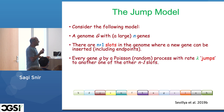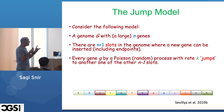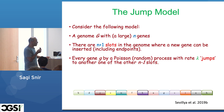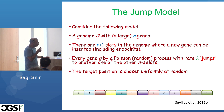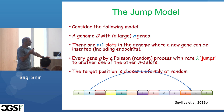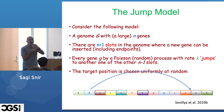Every gene G, by a Poisson random process with rate lambda, jumps to another slot — one slot out of the other slots in the genome. That target position is chosen uniformly at random. There was no real stochastic process describing gene order deterioration before this. So this model comes to fulfill that — that is the JUMP model. Every gene, at some Poisson process rate, jumps somewhere uniformly.